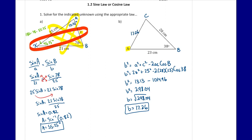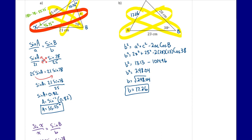Now that we have side b, we have enough information to find our missing angle. We can use cosine law since we now have all three sides, or we can use sine law since we have a full pair and a half pair. I prefer sine law: sine A over little a equals sine B over little b, so sine of our unknown angle over 28 equals sine 38 over 17.26.